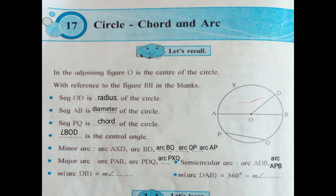Measure of arc DB equals measure of angle ___. Arc DB is the minor arc. The formula is: measure of a minor arc equals measure of a central angle. Angle BOD is the central angle. Measure of minor arc DB equals measure of central angle BOD.